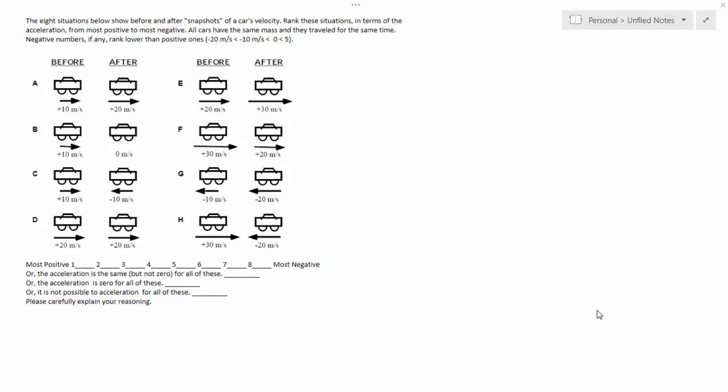Here we've got snapshots of cars before and after. They show you the initial and final velocity of the car. And the idea is to rank them according to acceleration, from the most positive to the most negative. It states in the question that all cars have the same mass and they travel for the same amount of time while their velocity changes.